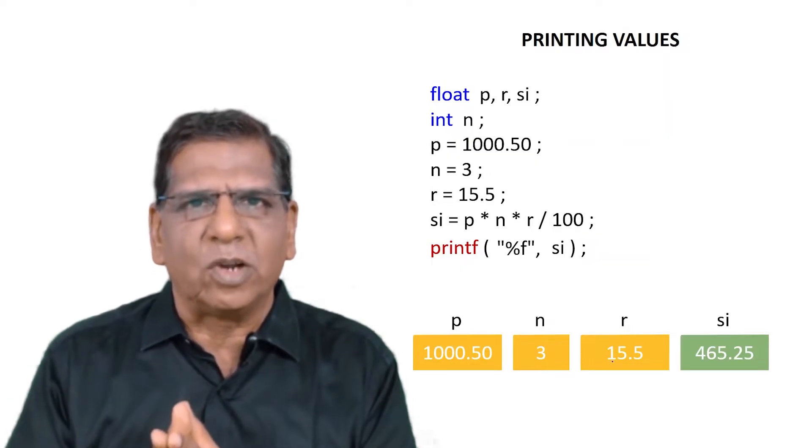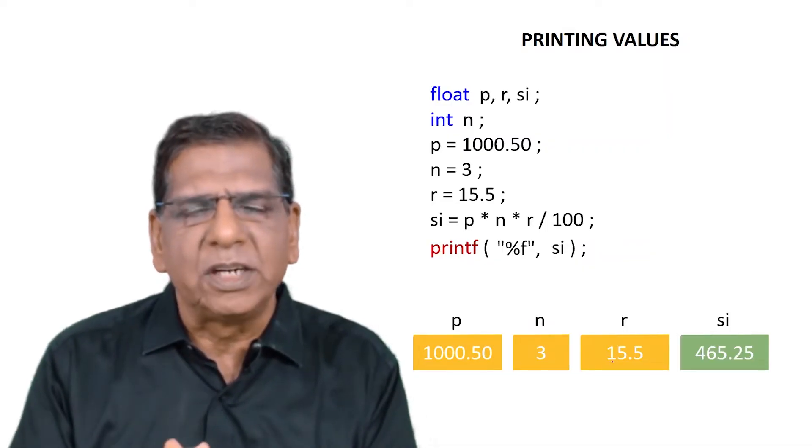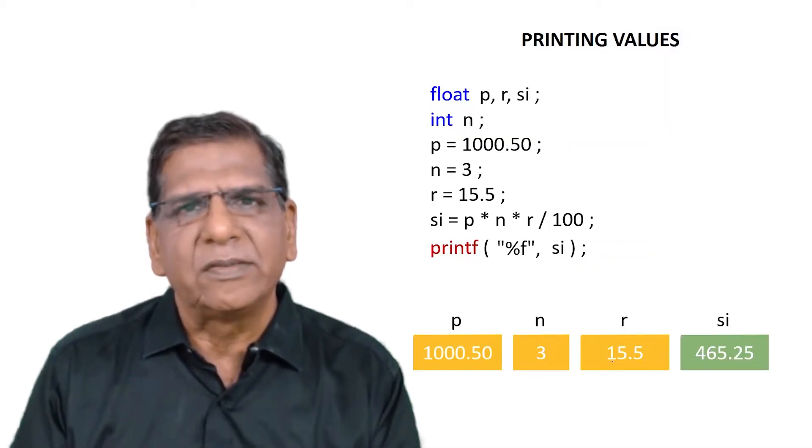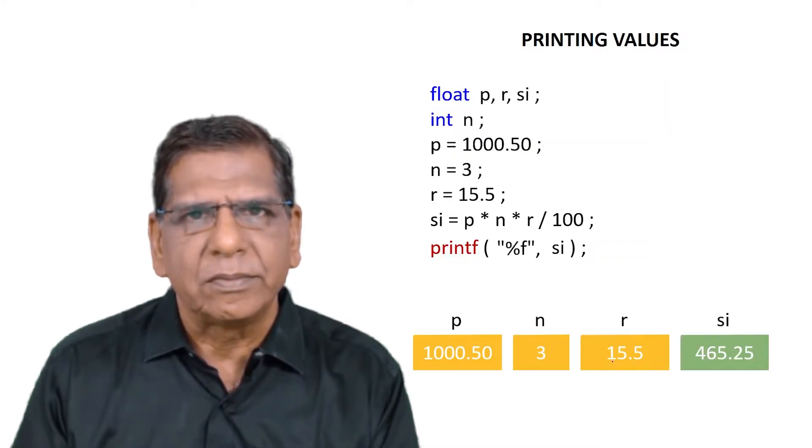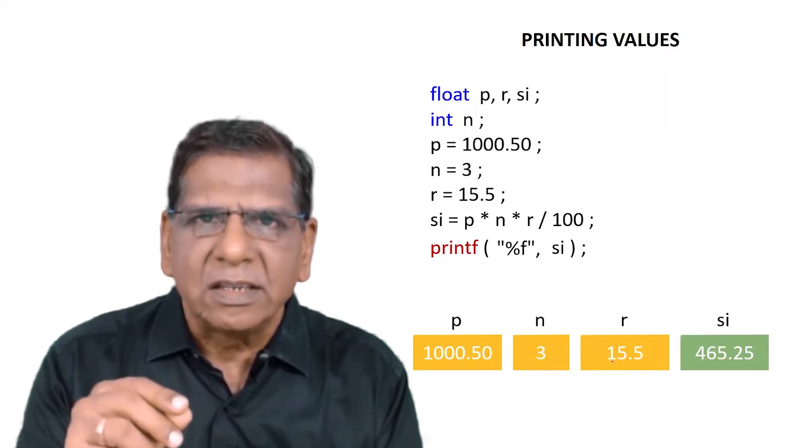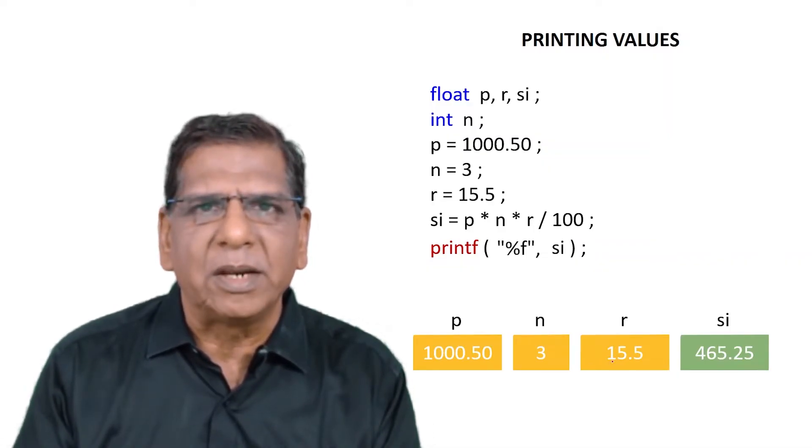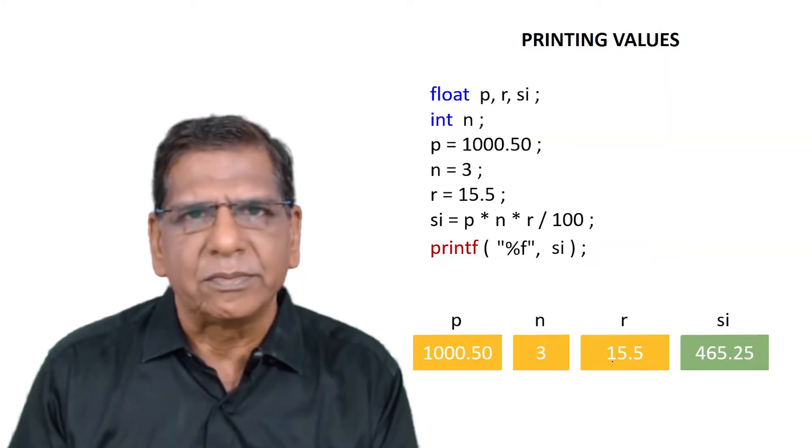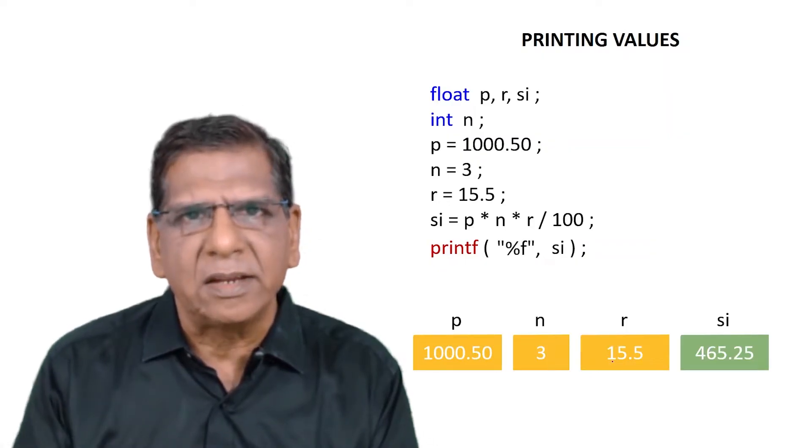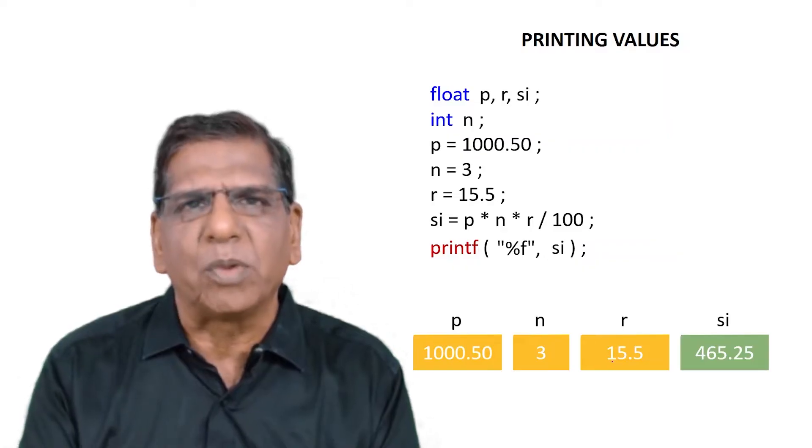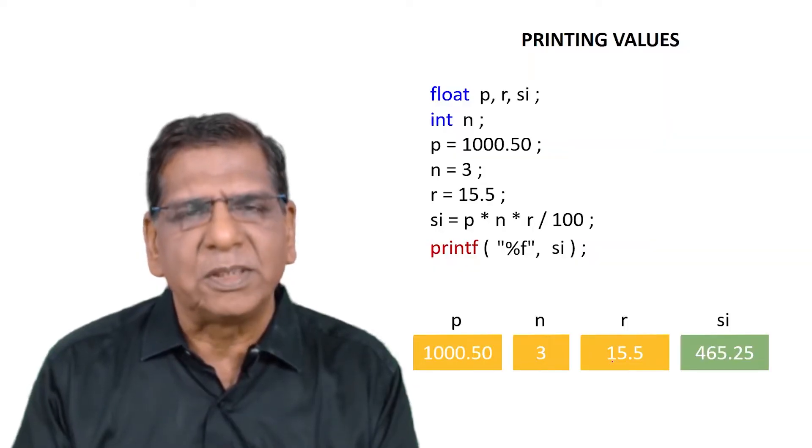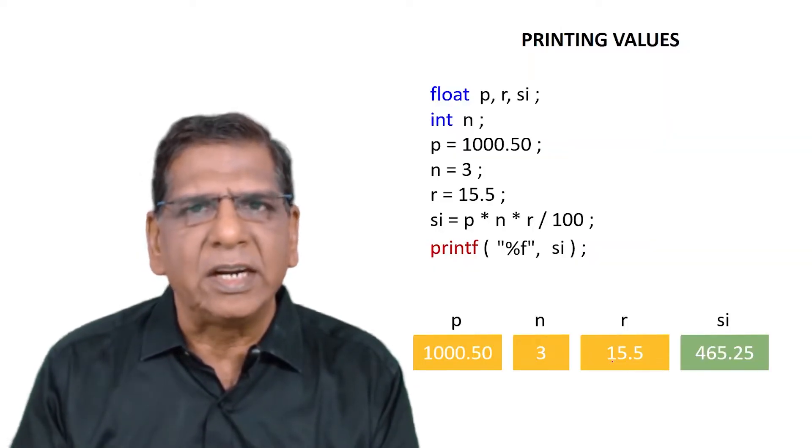Note that just saying printf SI is not enough. Before SI we need to use within double quotes what is known as a format specifier. So this percent F that we are using is known as a format specifier. Every format specifier begins with a percentage. F indicates that we are trying to print out a float value. SI is a float variable, that's why we employed percent F. Tomorrow in some other program if SI turns out to be int variable, we would employ percent I. And in yet another program if SI is a char variable, we would employ percent C. So percent F, percent I, percent C are format specifiers used for printing out a float, an int, and a char respectively.